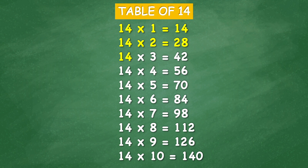Table of 14: 14 times 1 equal 14, 14 times 2 equal 28, 14 times 3 equal 42, 14 times 4 equal 56, 14 times 5 equal 70, 14 times 6 equal 84, 14 times 7 equal 98, 14 times 8 equal 112, 14 times 9 equal 126, 14 times 10 equal 140.